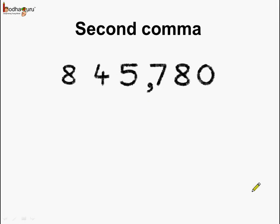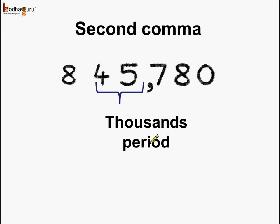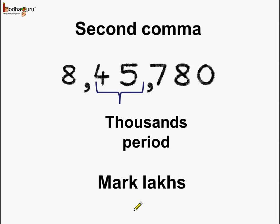Next, if we talk about the second comma — the first comma marks thousands and is placed after the units period. After the units period we have the thousands period. So the second comma is placed after the thousands period, and it marks how many lakhs there are. Here we have eight lakhs, and if we read the number it is eight lakhs, forty-five thousand seven hundred and eighty.